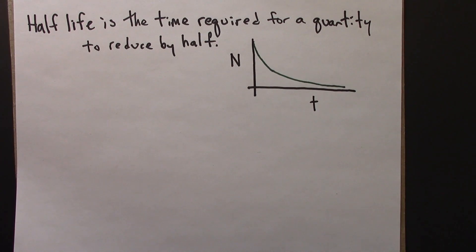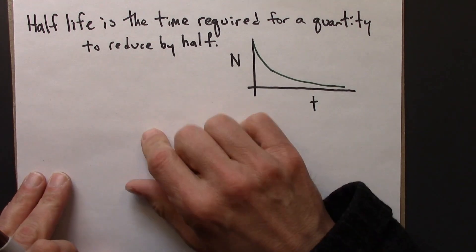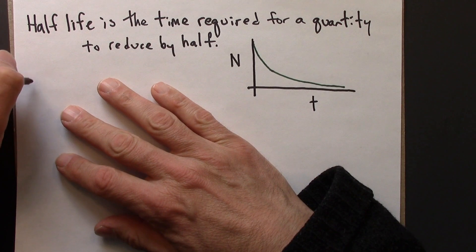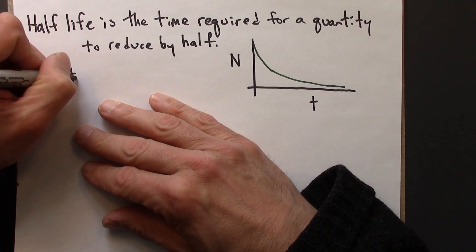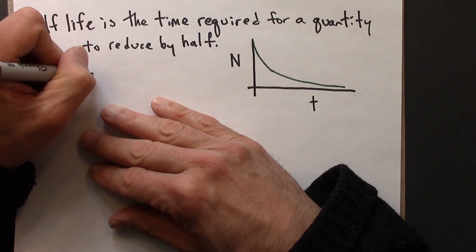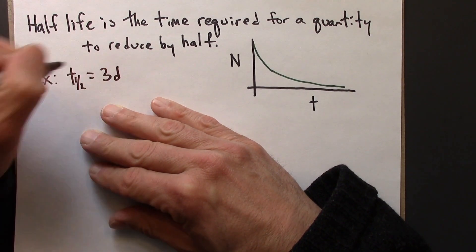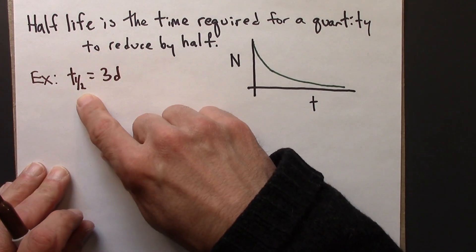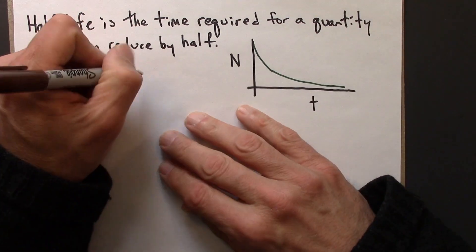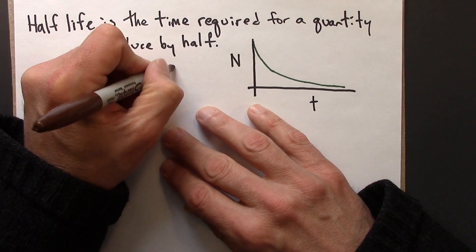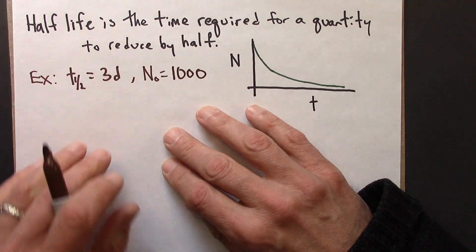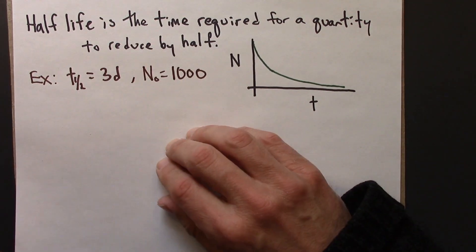So let's just work through a quick numerical example. You'll see how this goes. So let's say that the half-life happens to be three days, t_half for half-life. And that the initial amount of whatever this is in this example is 1,000.